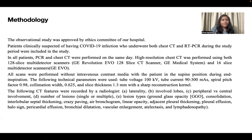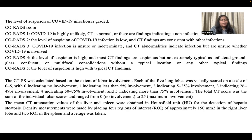Additional CT features recorded included interlobular septal thickening, crazy paving, air bronchograms, linear opacities, adjacent pleural thickening, pleural effusion, halo sign, pericardial effusion, bronchial dilatation, vascular enlargement, atelectasis, and lymphadenopathy. The level of suspicion of COVID-19 was graded with the CO-RADS score.